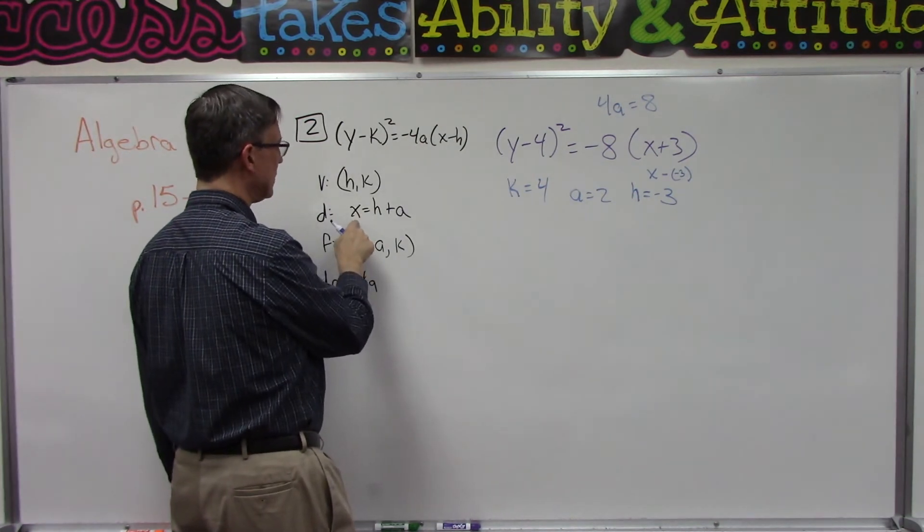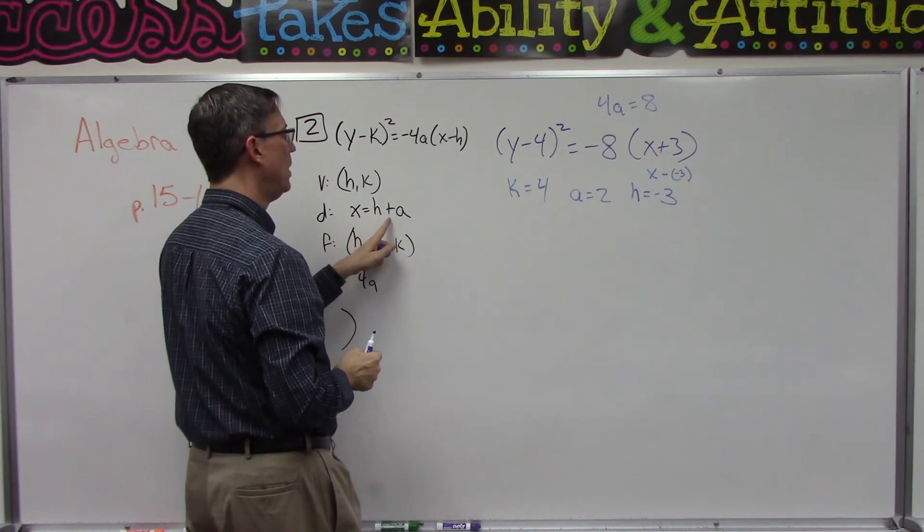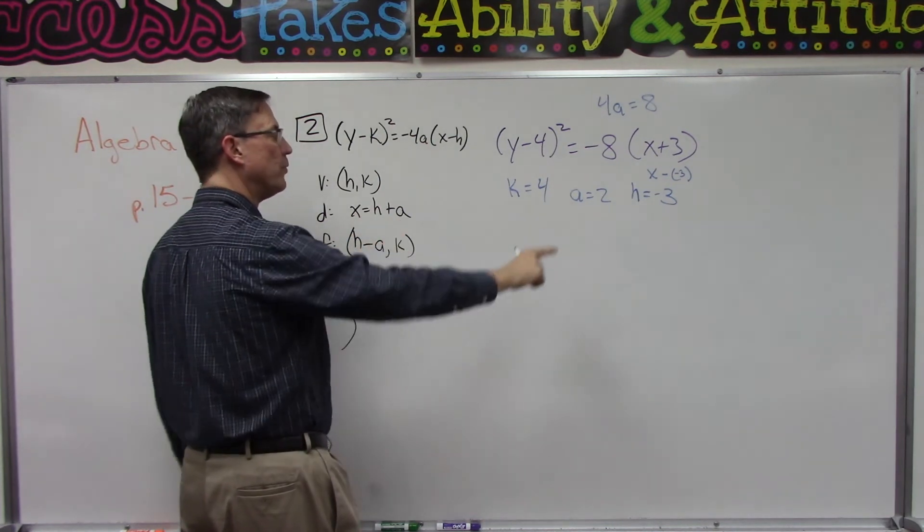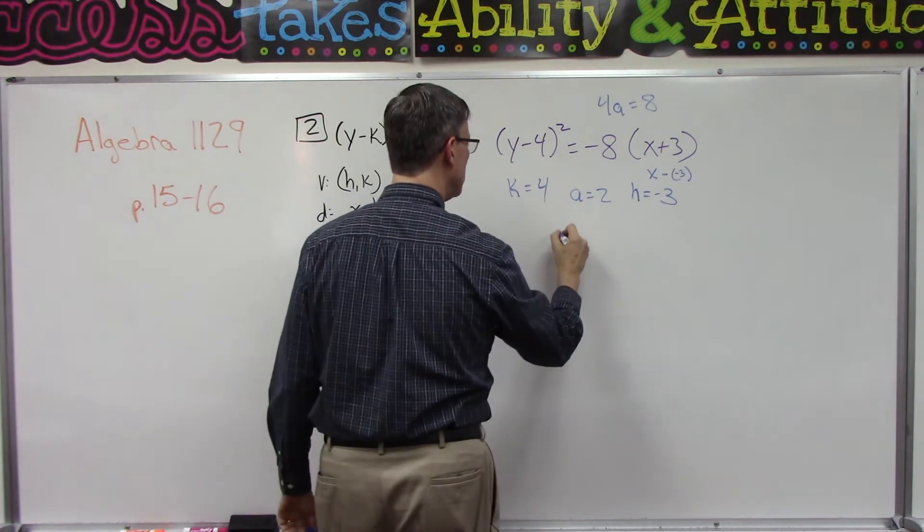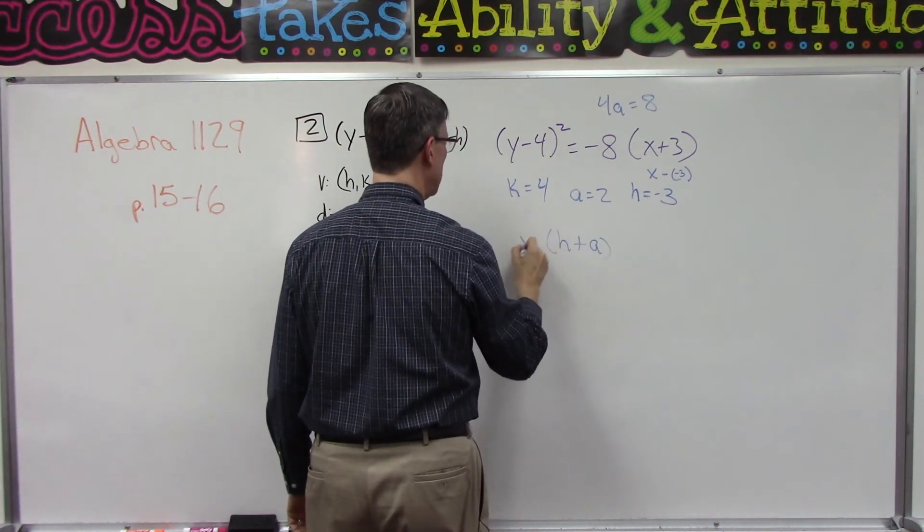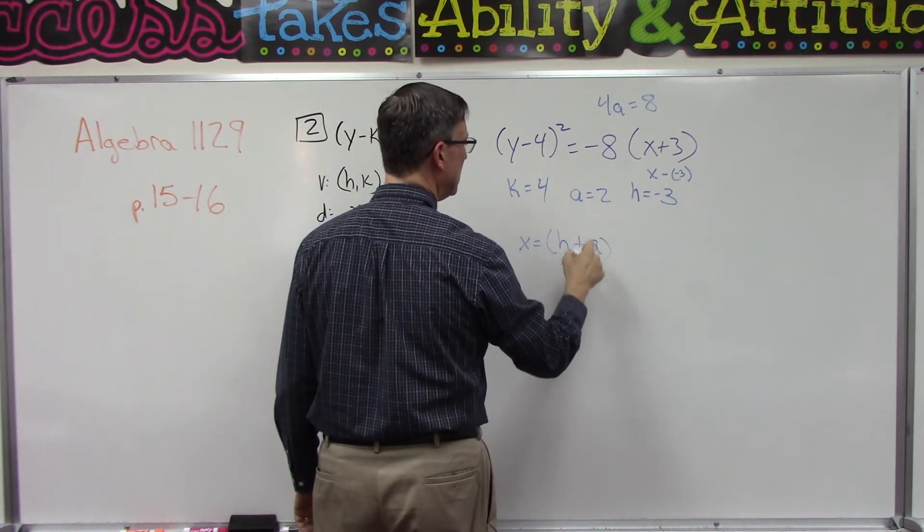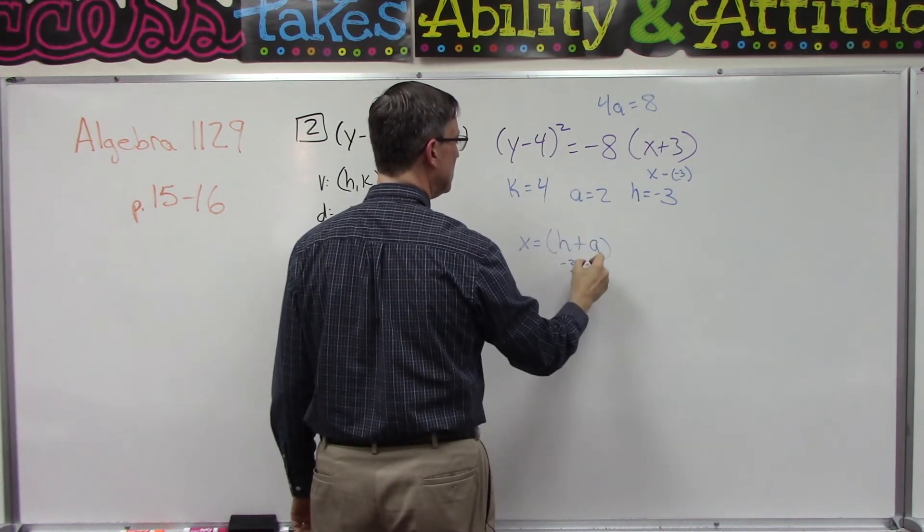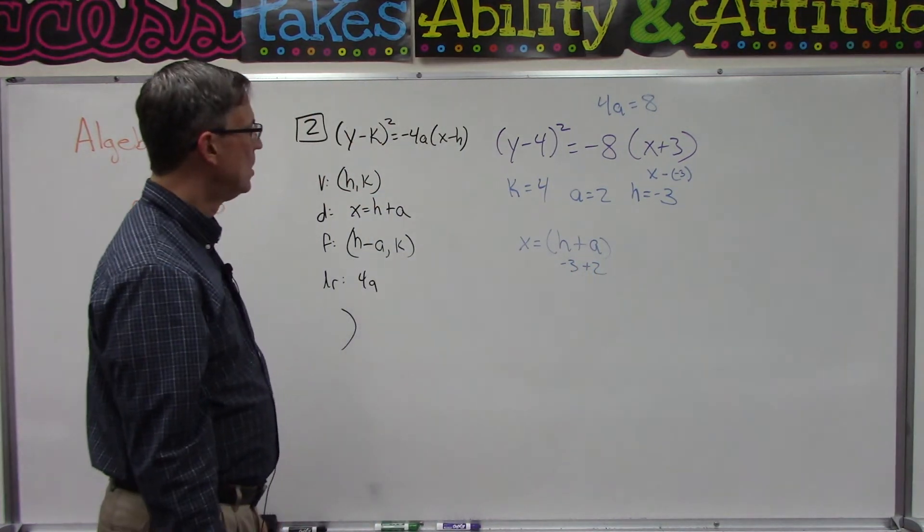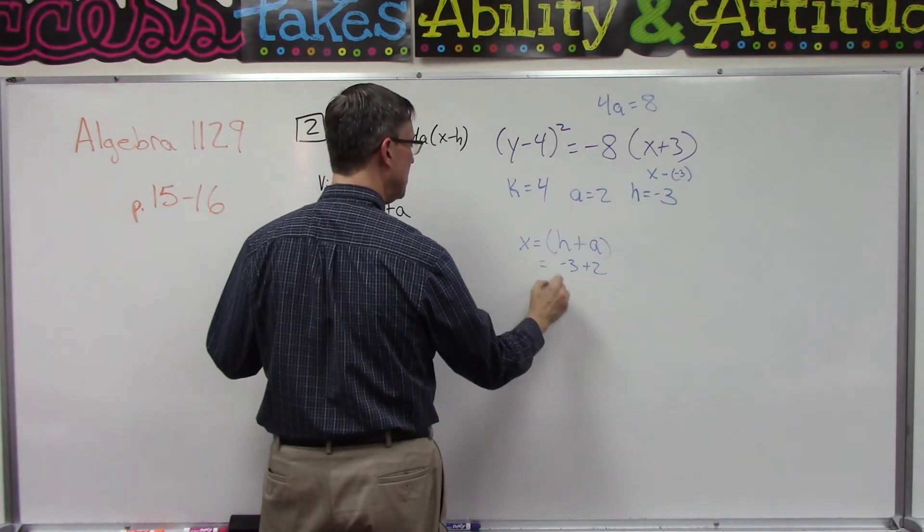Let's find what the directrix is. The directrix it says is X equals H plus a. Well, H plus a is going to equal the X. H is negative 3, a is 2, so that must mean that the directrix is going to equal the line X equals negative 1, okay?